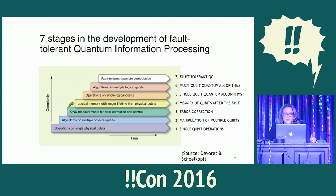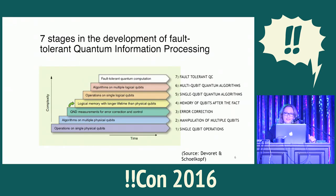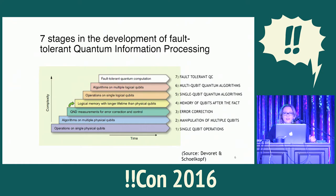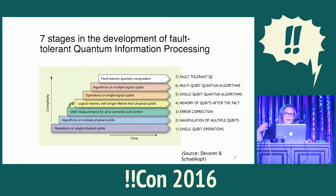There are seven stages to get from having a particle of light to having a large-scale quantum computer. First, we have to have a qubit and be able to do stuff to it. Second, we have to be able to do a lot of stuff to a lot of qubits. Third, we have to be able to correct our mistakes. After that, we need to keep that data in memory. Then we need to deploy a quantum algorithm on at least one qubit, then on a lot of qubits, and finally deal with noise and fault tolerance issues.